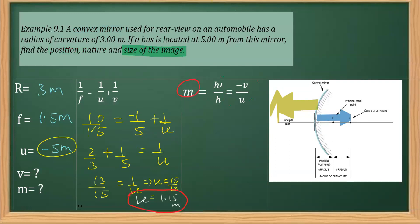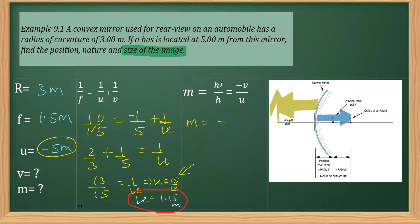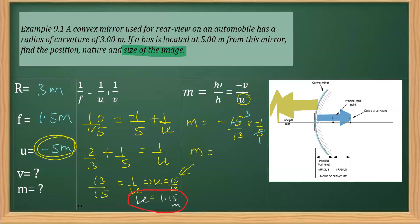We apply the magnification formula m = −v/u. Substituting v = 15/13 and u = −5, we get m = −(15/13) ÷ (−5). Dividing is the same as multiplying by the reciprocal, so m = (15/13) × (1/5) = 3/13, which simplifies to approximately 0.23. Magnification is a ratio, so it has no unit; m = 0.23.